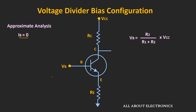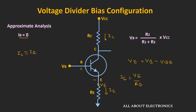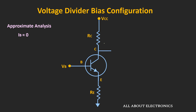So here, this voltage Vb can be given by this expression. And voltage Ve can be given as Vb minus Vbe. This emitter current Ie can be given as voltage Ve divided by Re. And the value of Ic is approximately equal to the emitter current. So once we know the value of this collector current, then we can easily find the voltage Vce. Let's apply the KVL on this output side.